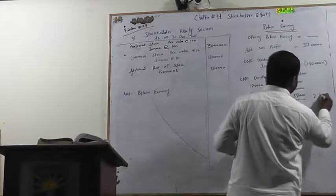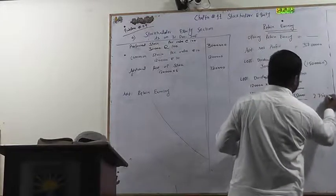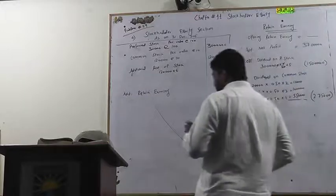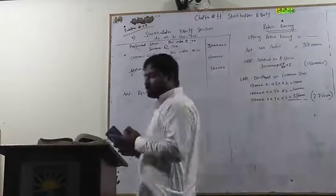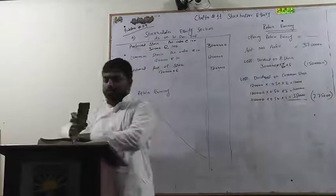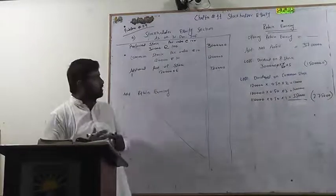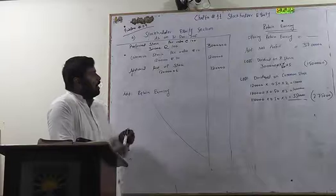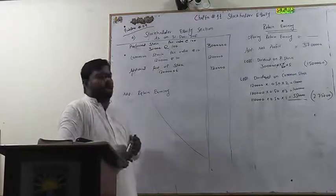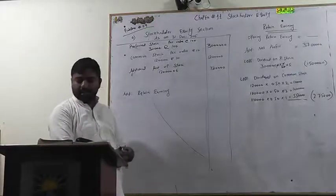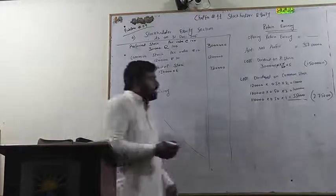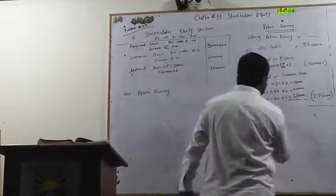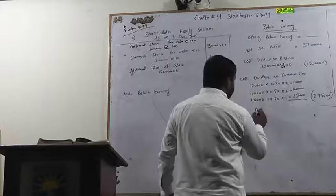So you will have less total value. You have 2,75,000 for the common stock dividend, and you have 15,000,000 dividend. After giving these two dividends, if you have a total dividend, that is closing retained earnings.